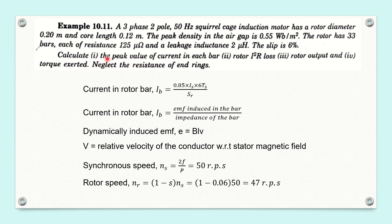As the first part, we have to calculate the peak value of current in each bar. When asked to calculate the rotor bar current, we first think of the equation: rotor bar current IB = 0.85 × IS × 6TS divided by SR. But there is no data to calculate the stator current IS or the stator turns per phase TS, so we cannot use this particular equation.